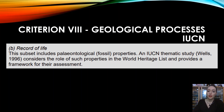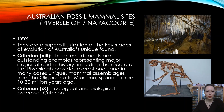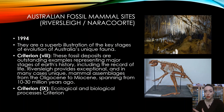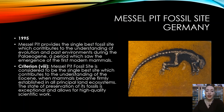Another example is the Australian Fossil Mammal Sites, which received its status in 1994. They are a superb illustration of the key stages of evolution of Australia's unique fauna. And then there's the Messel Pit Fossil Site in Germany — that fossilized turtle I showed earlier is from there. It was given status in 1995, and the Messel Pit provides the single best fossil site contributing to the understanding of evolution and past environments during the Paleogene time period.